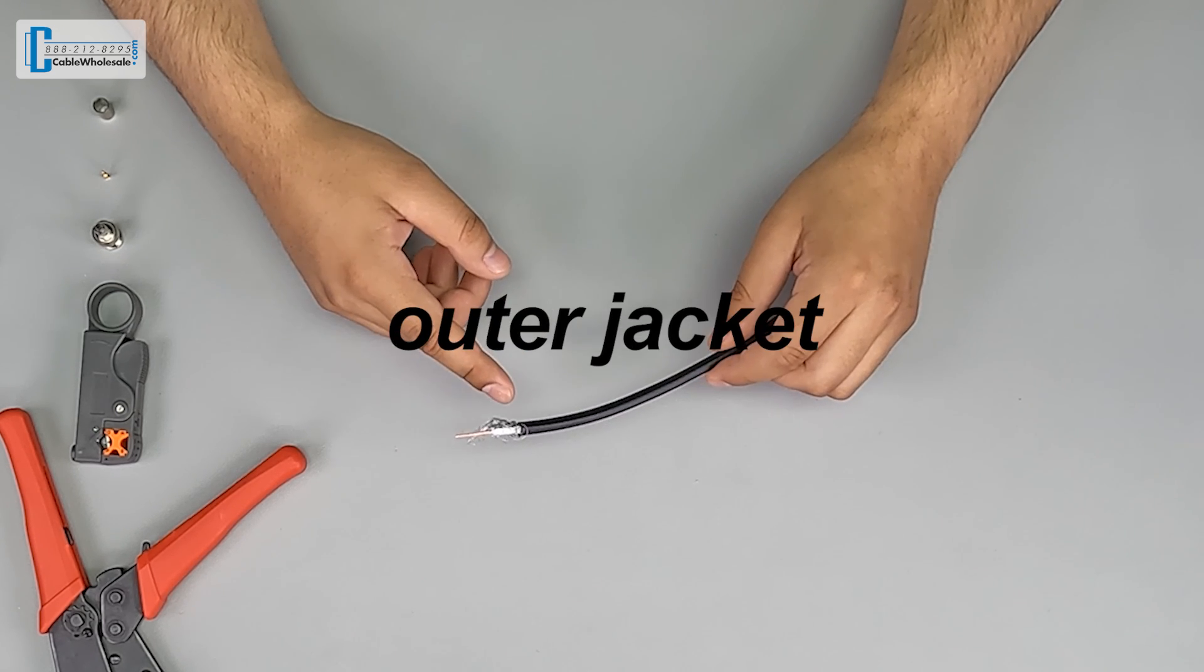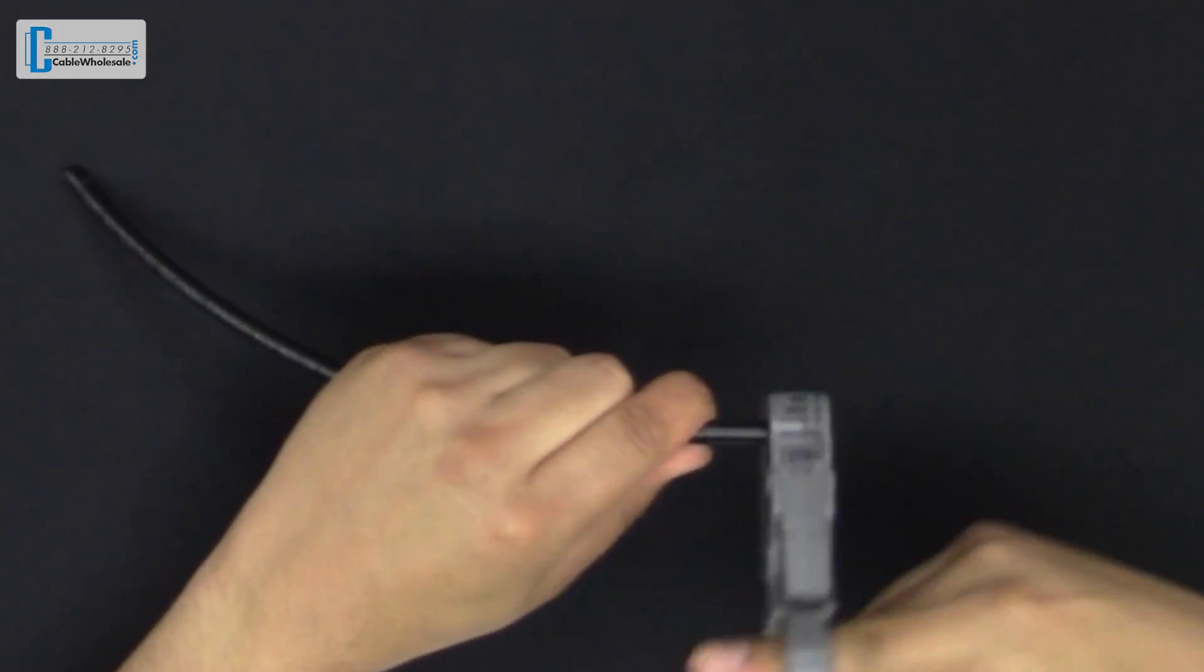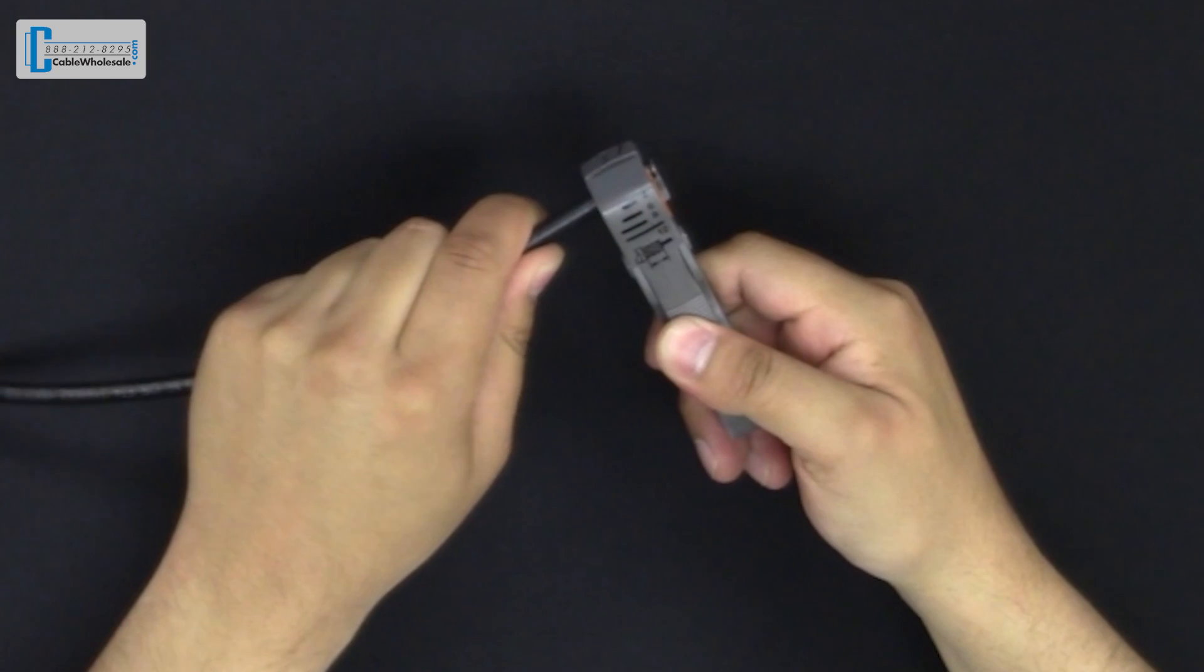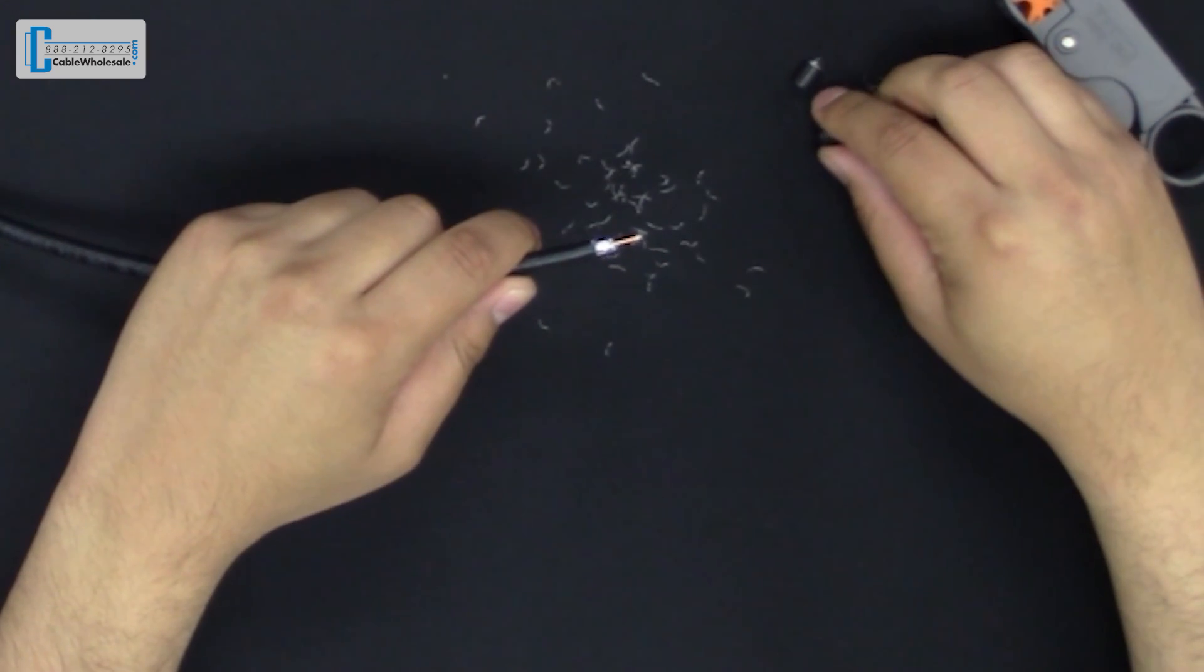The second cut removes just the outer jacket, and this is where most issues arise. If the cut is too deep, too much of the braid is going to be removed, and you have a problem with the connector. The braid adds strength and thickness to hold the connector to the cable when terminating.